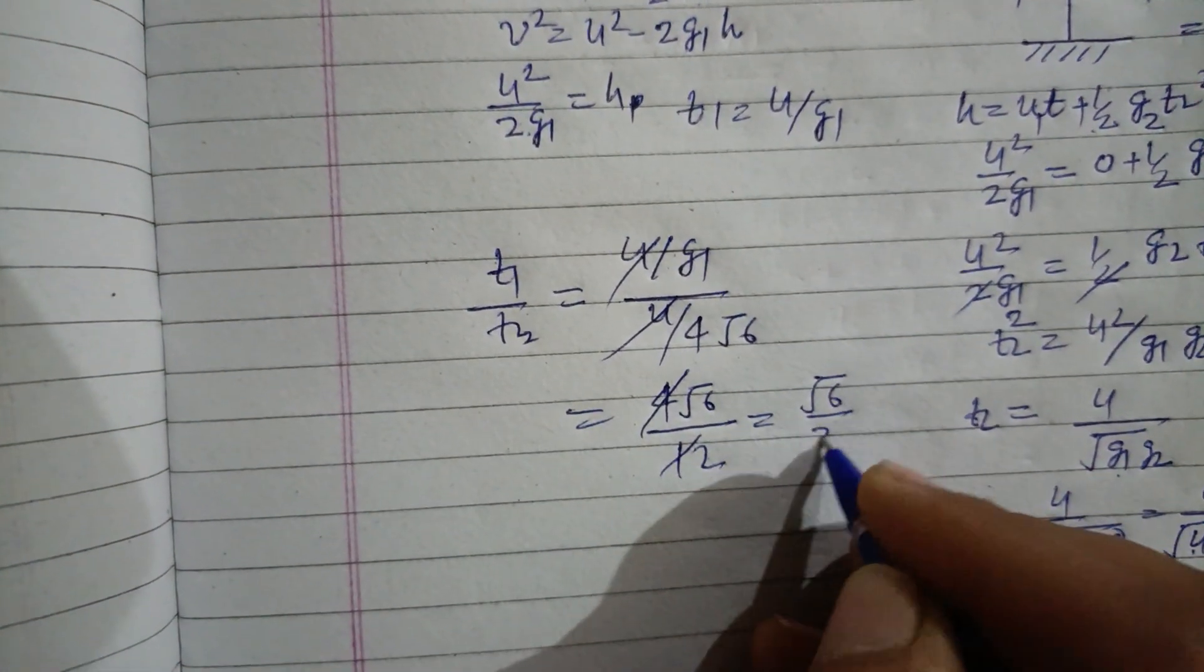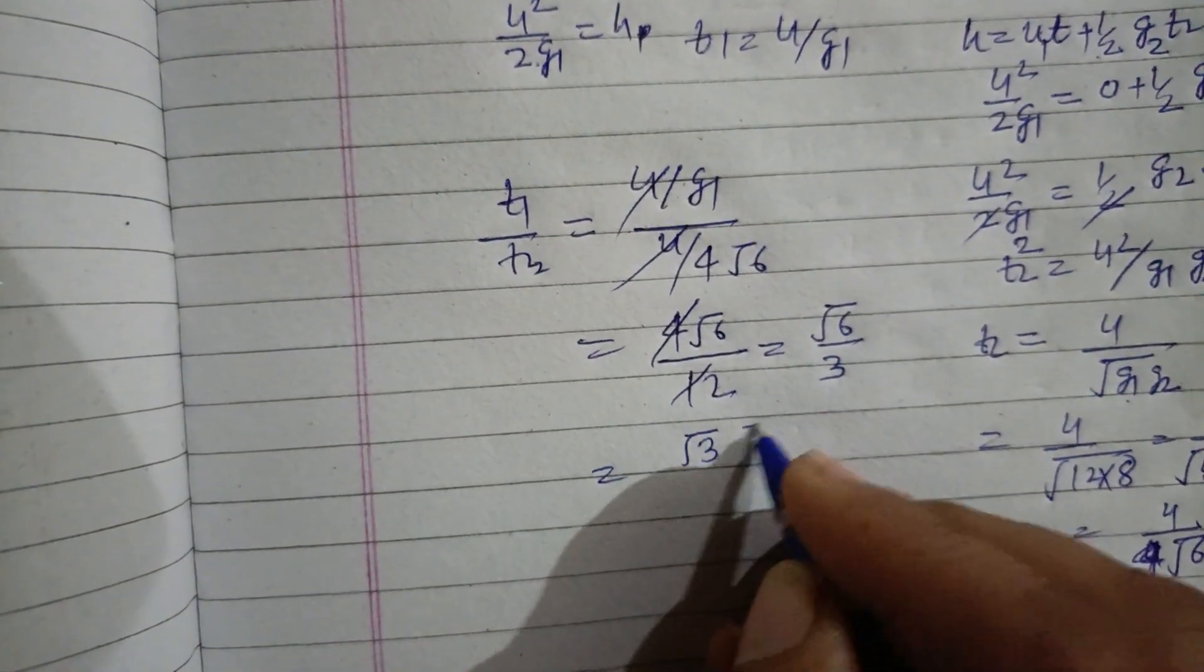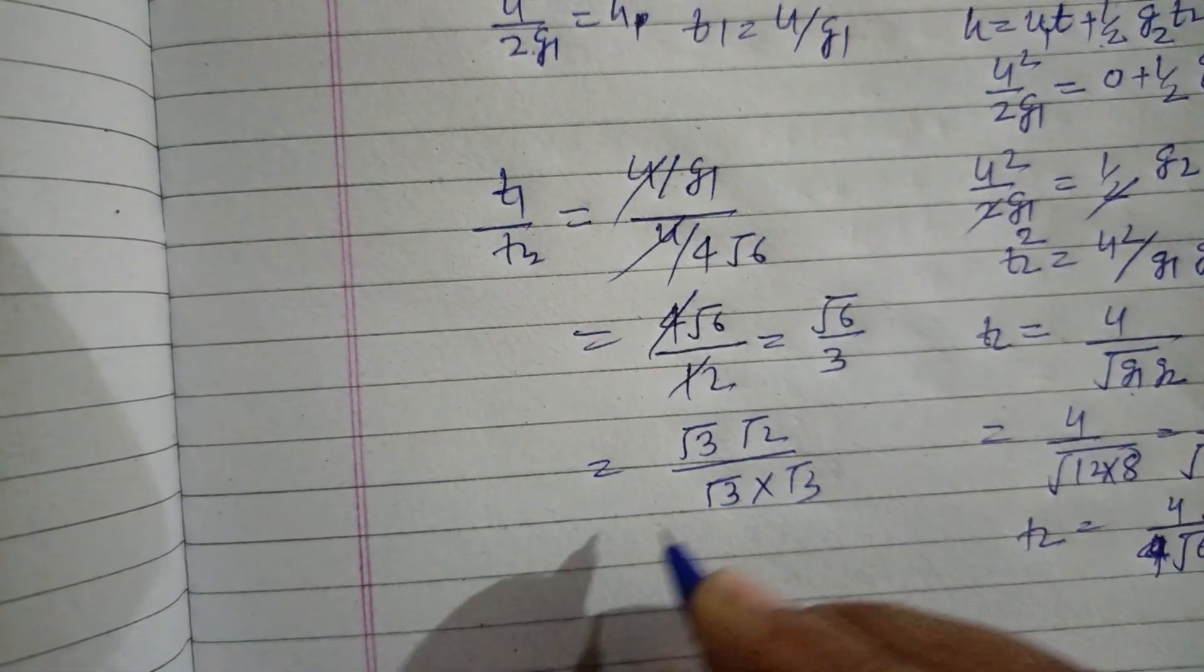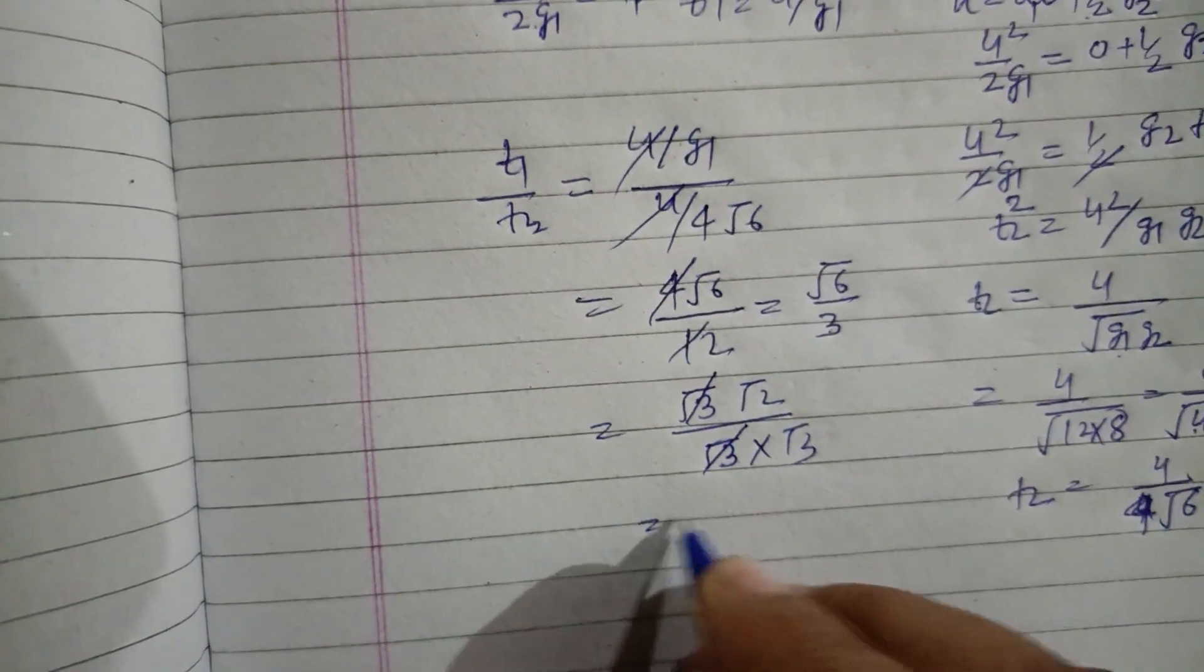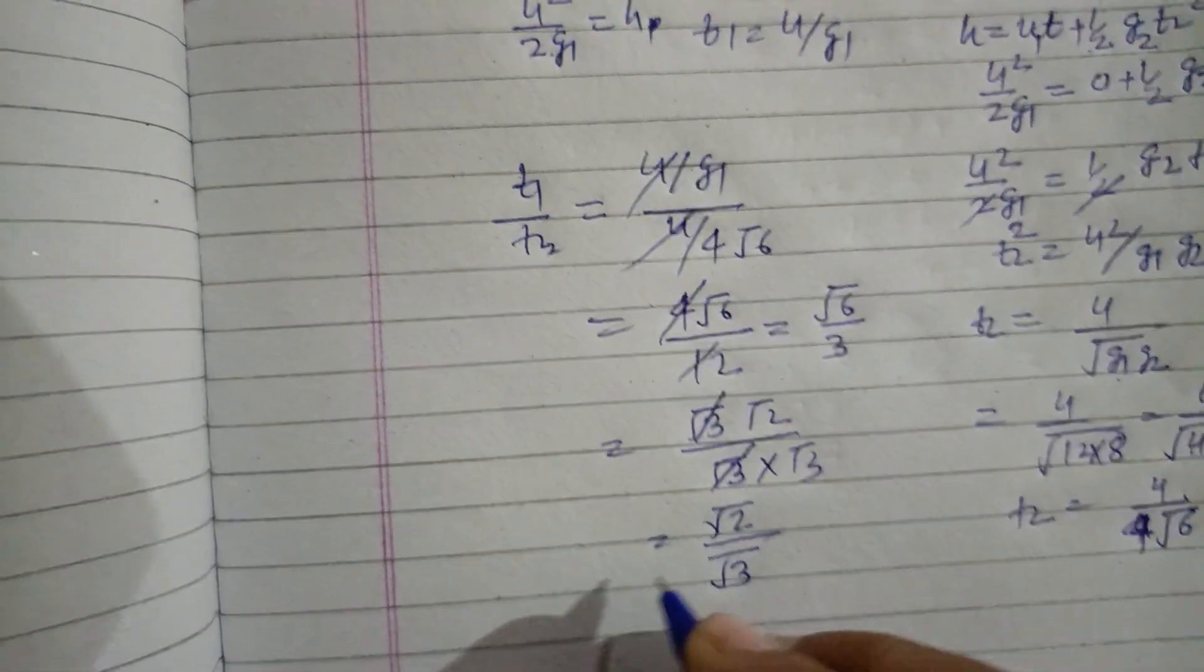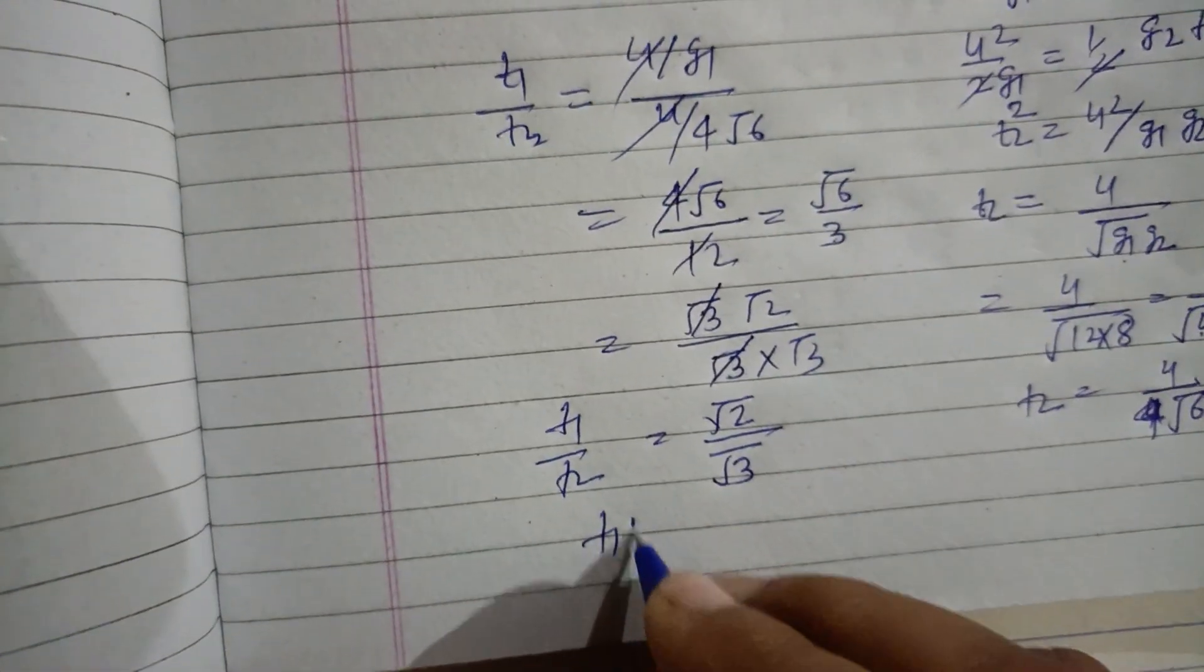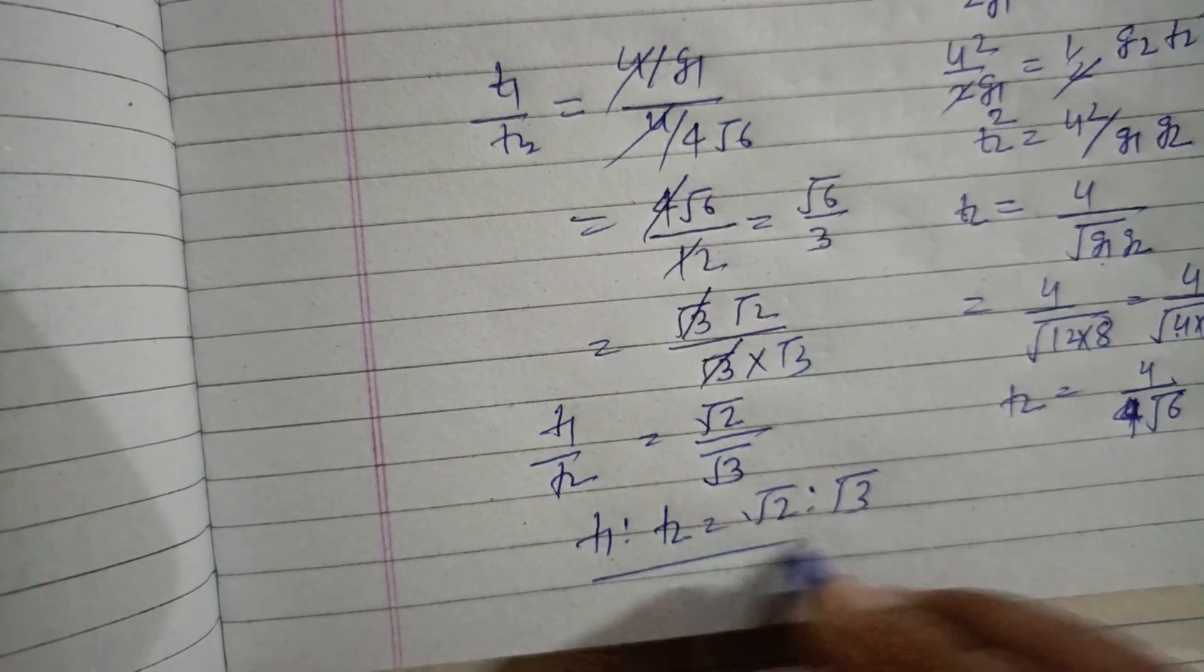Or we write it as root 3 times root 2 upon root 3 times root 3. Root 3 cancels, so this is root 2 upon root 3. t1 upon t2, t1 ratio t2, equals root 2 ratio root 3.